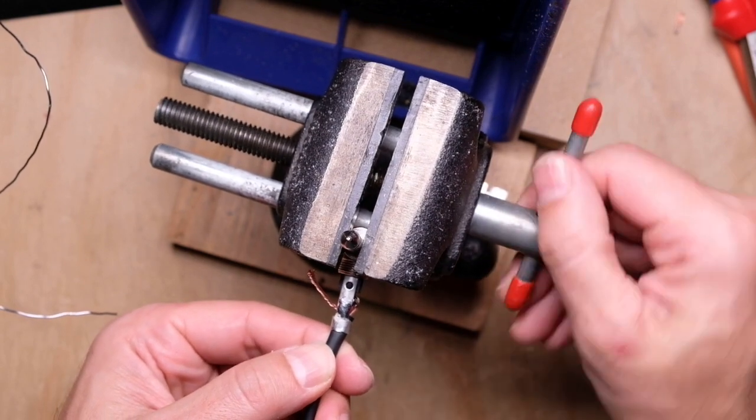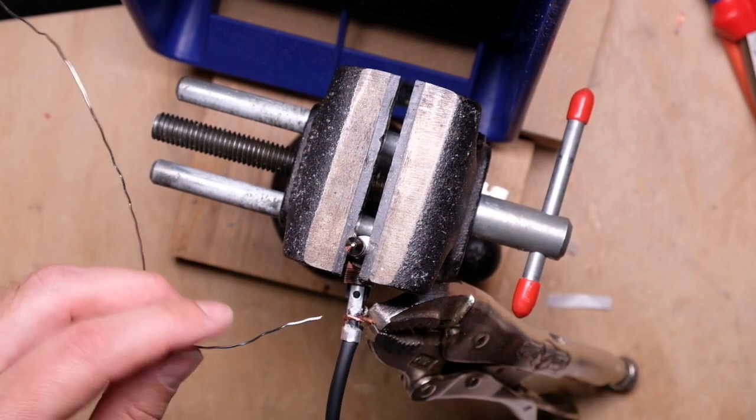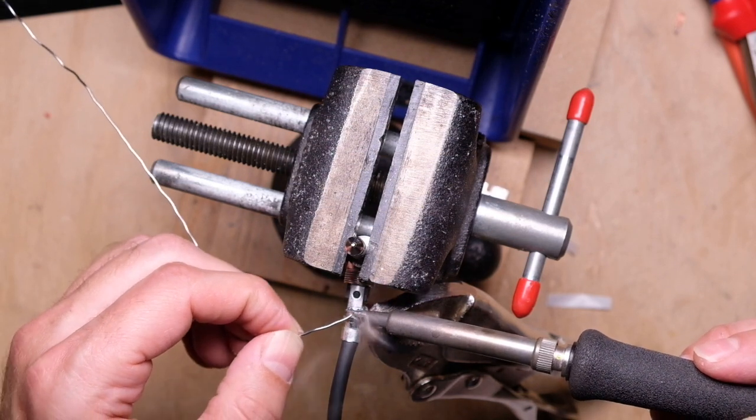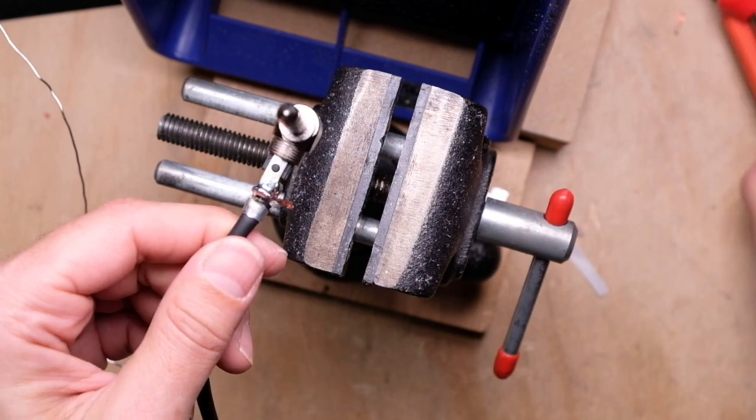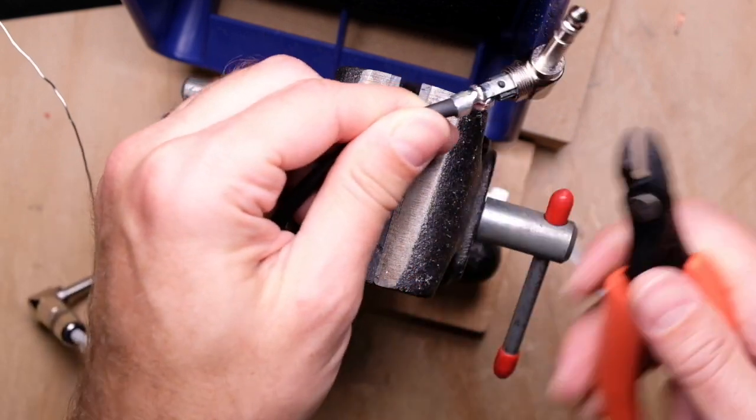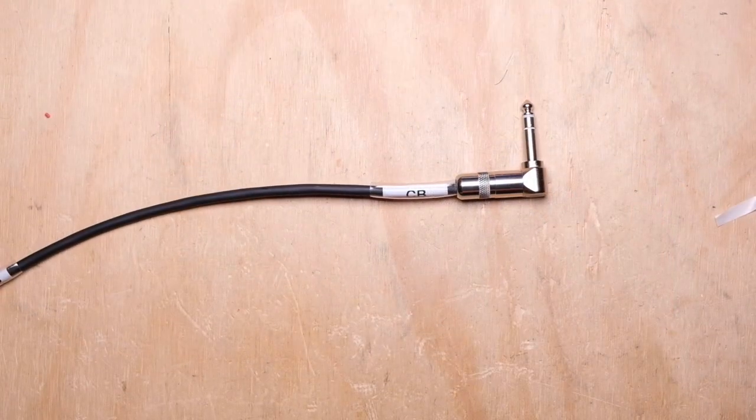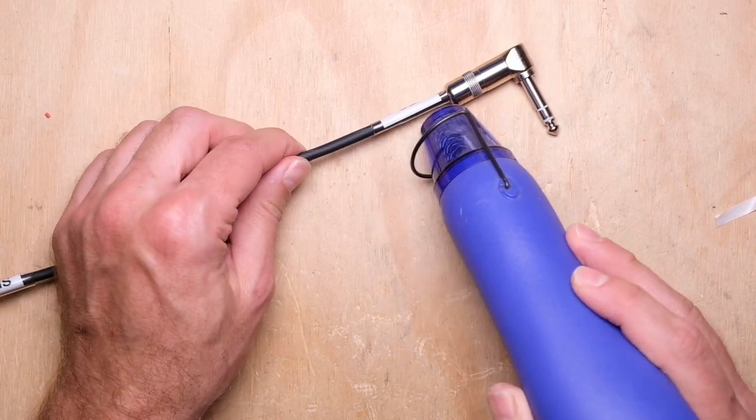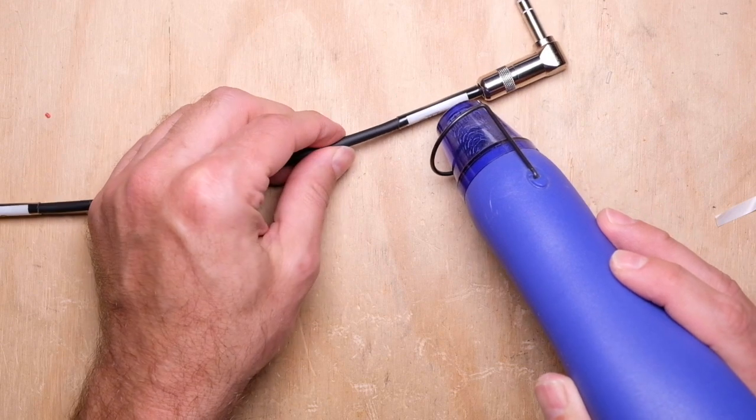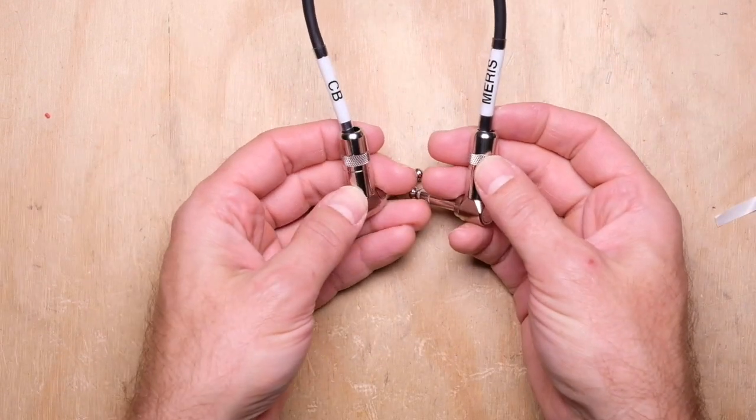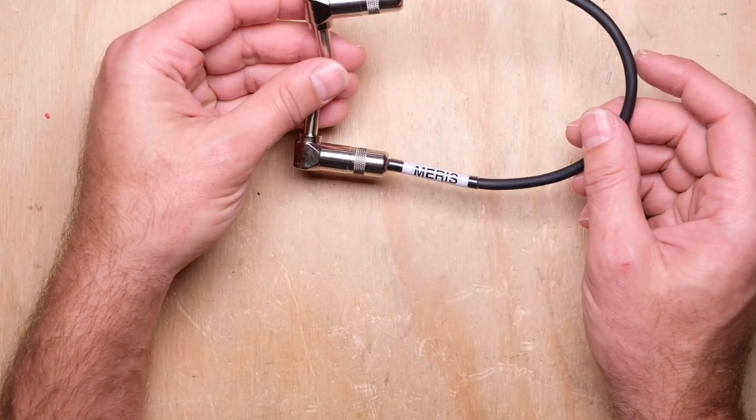And then once again, flip over. Secure the shield. Secure that. So now get the labels going. And there you have it. One Chase Bliss to Maris MIDI IO port cable completed. I've been doing this a while now. And so far I have a 100% success rate with the customers on this.